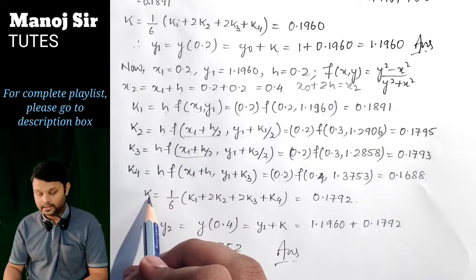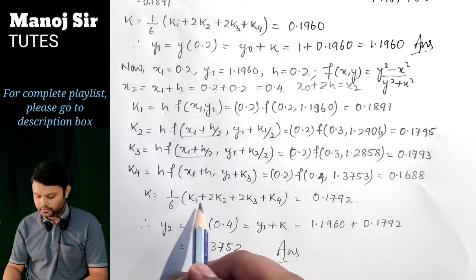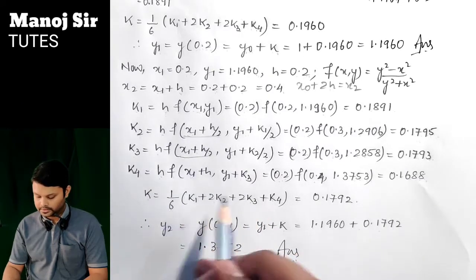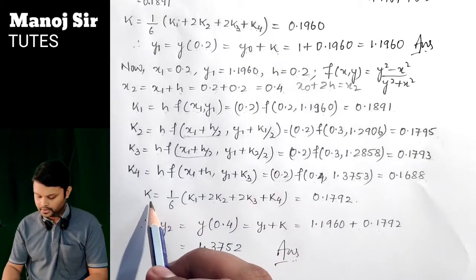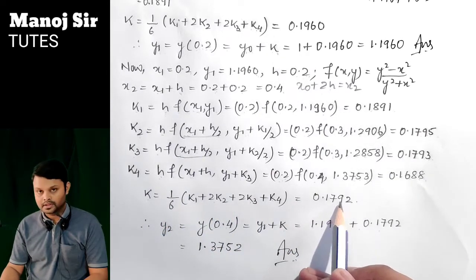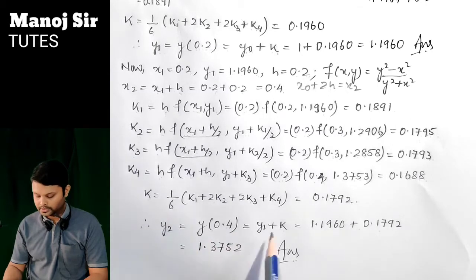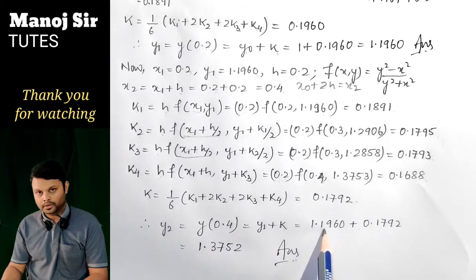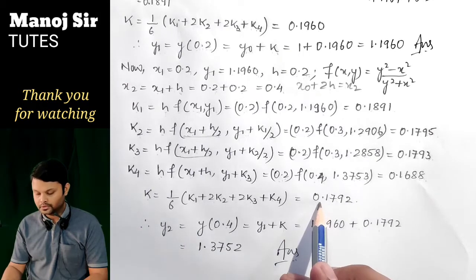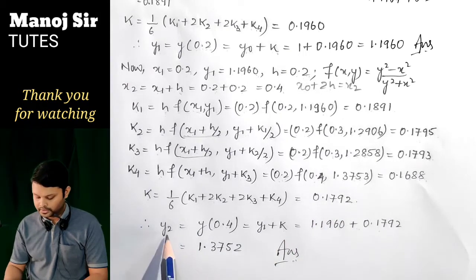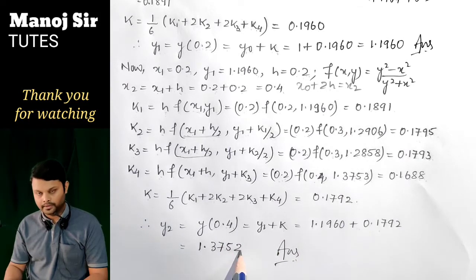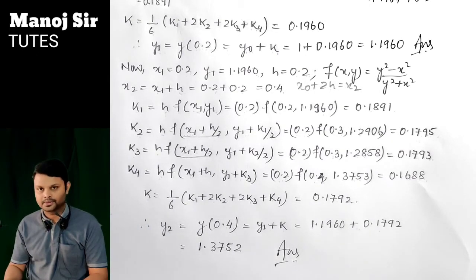After finding k₁, k₂, k₃, k₄ in the second step, the weighted mean k = (1/6)(k₁ + 2k₂ + 2k₃ + k₄) = (1/6)(0.1891 + 2×0.1795 + 2×0.1793 + 0.1688) = 0.1792. Therefore y₂ = y₁ + k = 1.1960 + 0.1792 = 1.3752. This is the value of y at x = 0.4, up to four decimal places. Thank you so much.